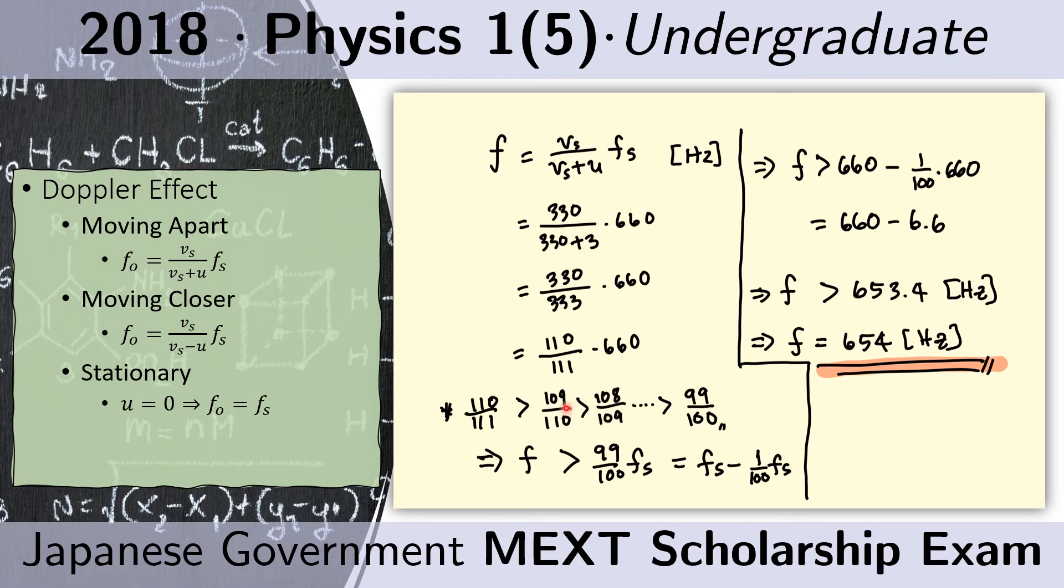This is less than the number to the left of it. That also means that 99 over 100 is less than this number. This is a general property of fractions. If you subtract 1 from the numerator and the denominator, the number you get is less than the original number.